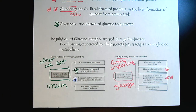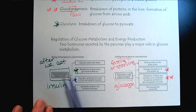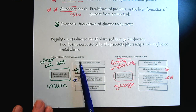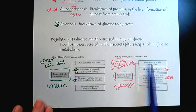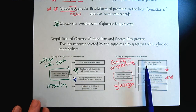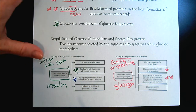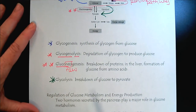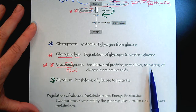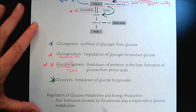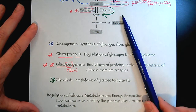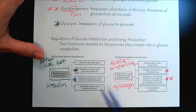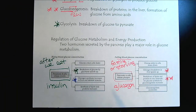An important application of the terms we've defined is looking at their role depending on whether we've just eaten or we're fasting or starving — those are the connections to make between the four pathways and the day-to-day rhythms of life.